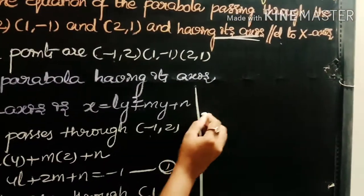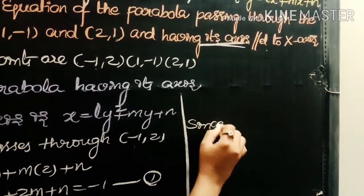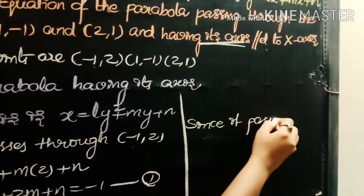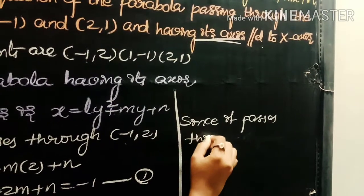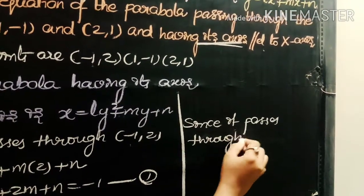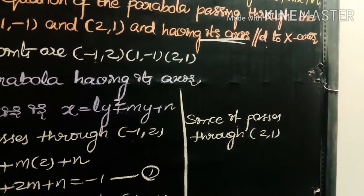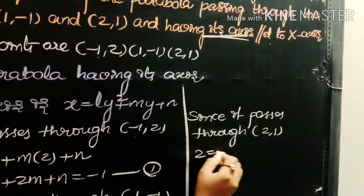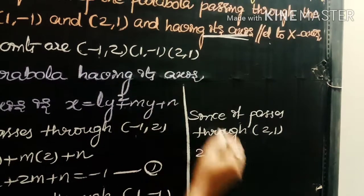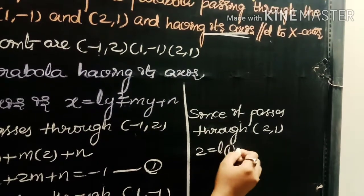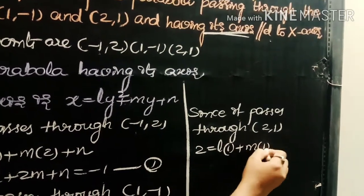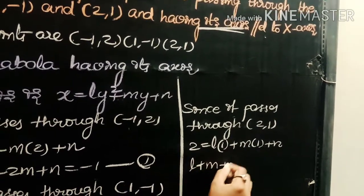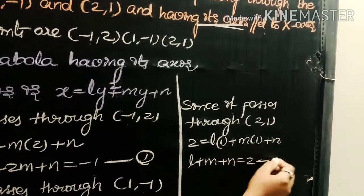Substituting the third point (2, 1) into x = ly² + my + n: l(1²) + m(1) + n = 2, that is l + m + n = 2 — equation (3). We now have three equations to solve for l, m, and n.